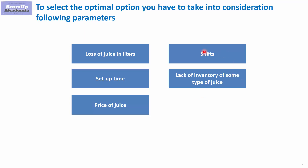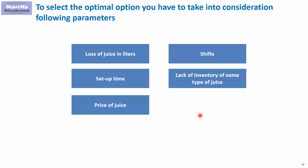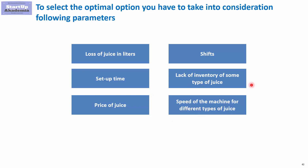You have to take into account not only what is beneficial from a production point of view, but also from the whole company's perspective. Finally, the sequence of production will impact the machine — different types of juice affect the machine differently, and the speed of the production machine may be influenced by what's being produced, which can also change the optimal sequence. In short, the sequence of production batches really matters: it helps minimize lost product, but you should also consider company-level factors like stock availability and machine impact.